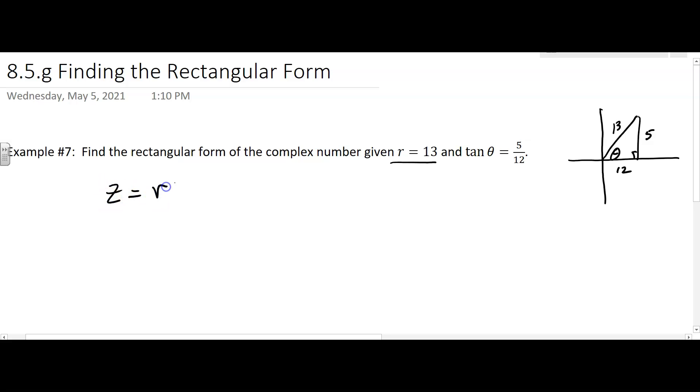z equals r(cos θ + i sin θ). We know r is 13. We don't know what theta is, but we do know the cosine is 12/13, and the sine of theta is 5/13. Don't forget the i.